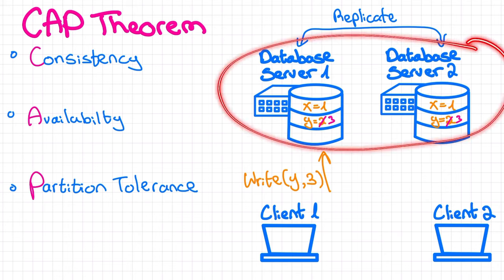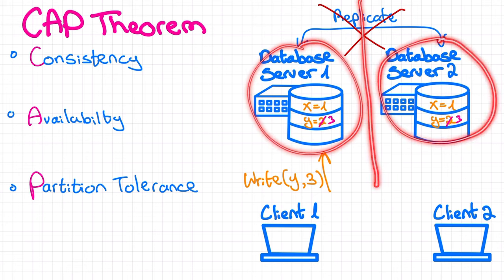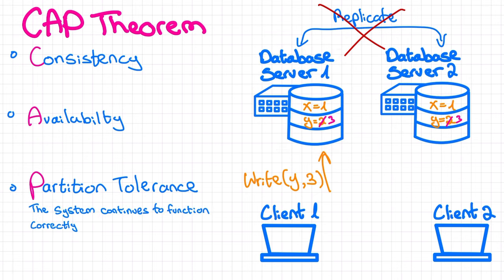Say these two nodes are up and running, but they can no longer communicate with each other. Basically, the system was partitioned into two non-communicating parts. Tolerating this partition means that the system continues to function correctly despite this failure.